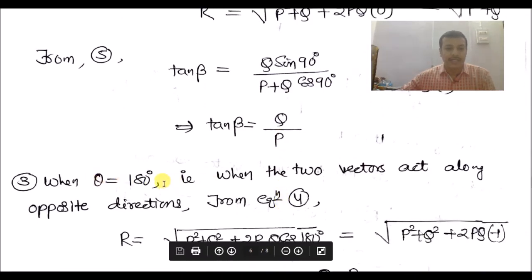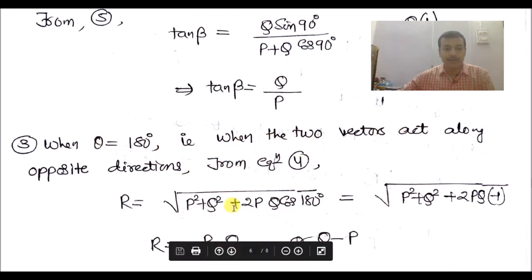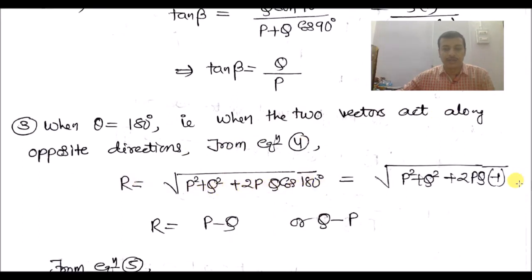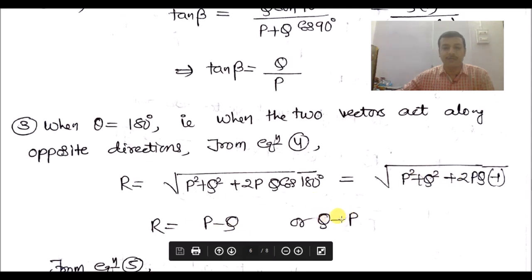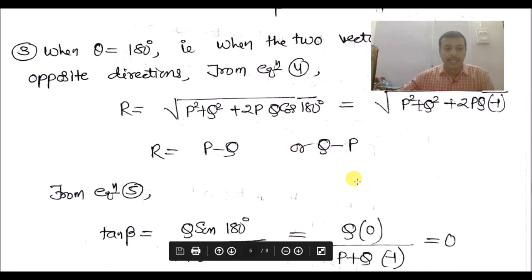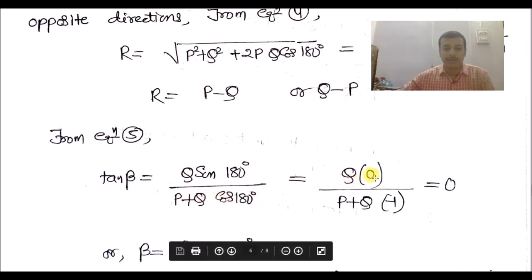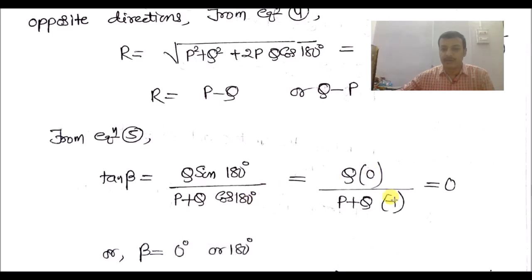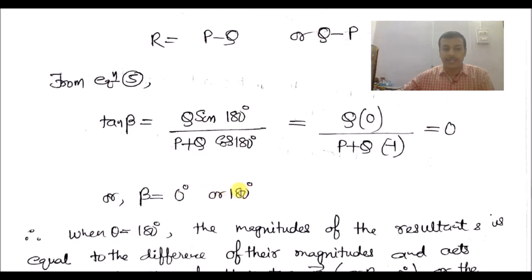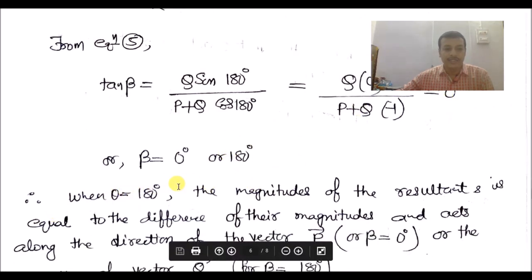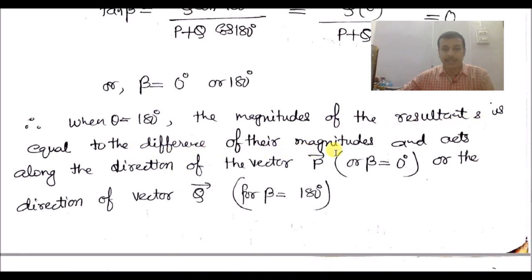Case 3: when θ = 180°, the two vectors act in opposite directions. R = √(P² + Q² + 2PQ·cos 180°) = √(P - Q)² = P - Q (or Q - P). Also, tan β = Q·sin 180° / (P + Q·cos 180°) = 0, so β = 0° or 180°. Therefore, when θ = 180°, the magnitude of the resultant equals the difference of the magnitudes and acts along the direction of vector P (β = 0°) or vector Q (β = 180°).